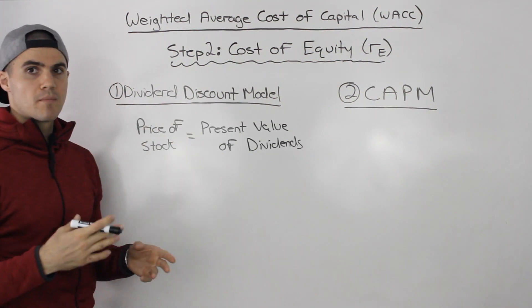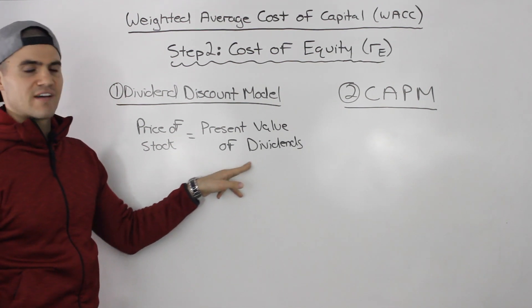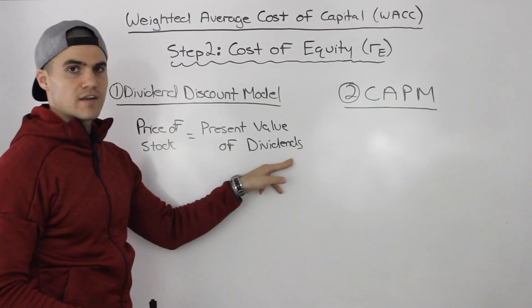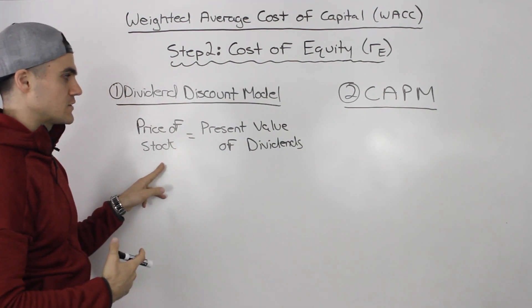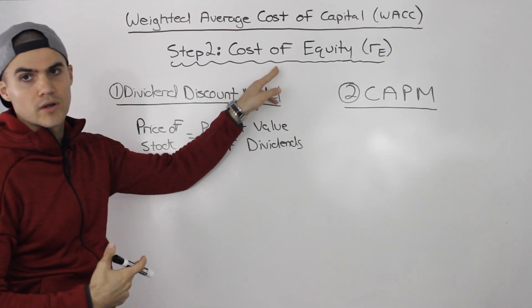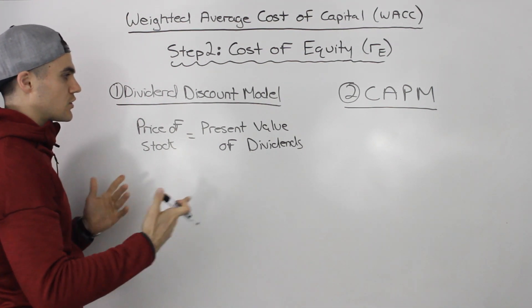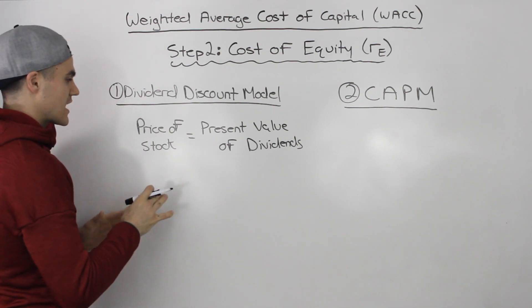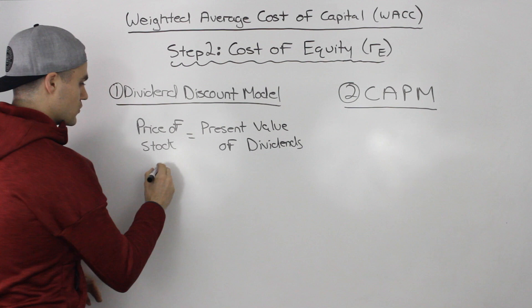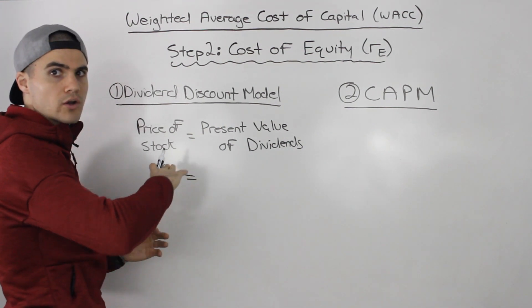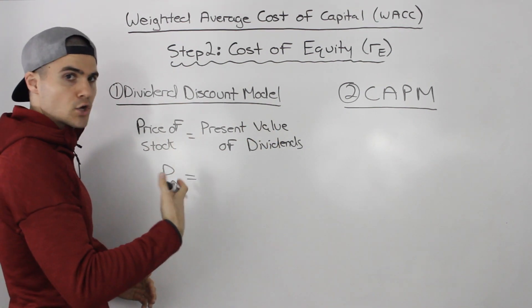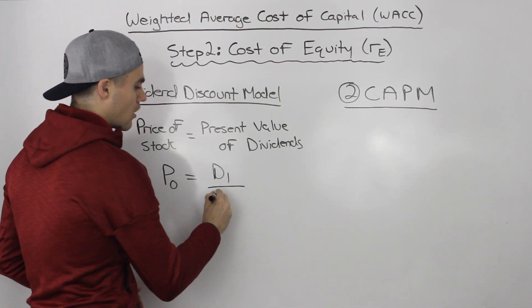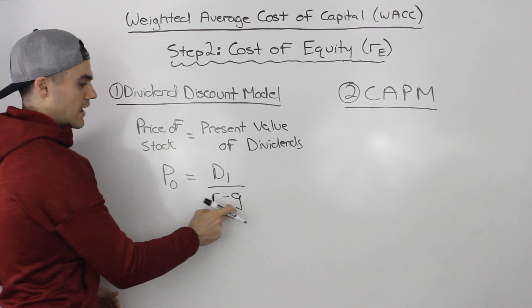The first method is the dividend discount model. If you remember from the stocks chapter, the price of a stock equals the present value of all dividends. The rate we discount those dividends by to get the stock price at time zero is the cost of equity, or return on equity. In the constant growth scenario — which you'll encounter most often — the price at time zero is a growing perpetuity: P0 = D1 / (r - g), where r is the return on equity and g is the growth rate.